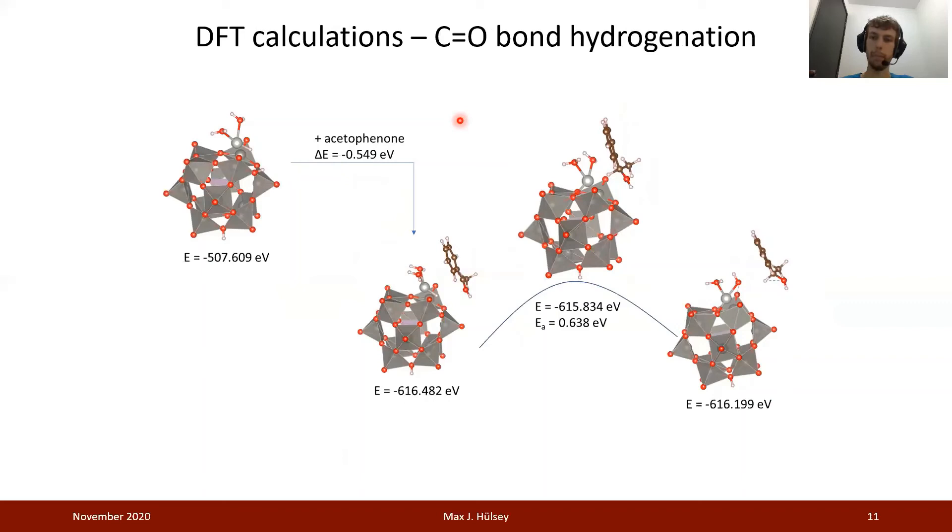Now we have considered the first step, that is the CO double bond hydrogenation. Upon the adsorption of the acetophenone, after the heterolytic splitting of hydrogen, we transfer the proton from the polyoxometalate to the substrate, to the acetophenone. We can then do the transfer of the hydride species from palladium to the substrate with a reasonable activation barrier, which is quite in accordance with what we have seen based on our experimental data based on the Eyring plot.